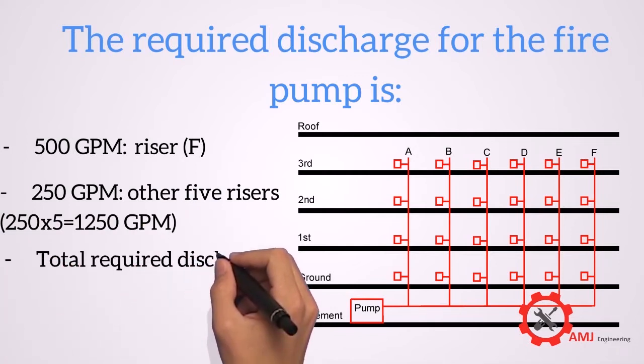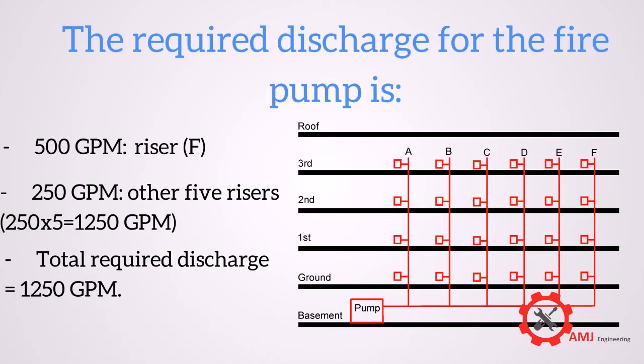Total required discharge equals 500 plus 1250 equals 1750 GPM. Since total not to exceed 1250 GPM, then pump discharge should be selected at 1250 GPM.